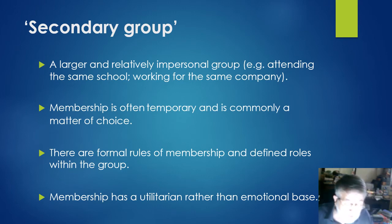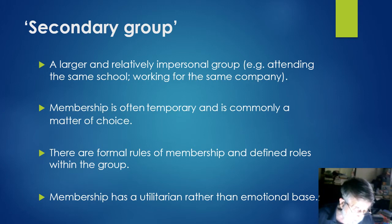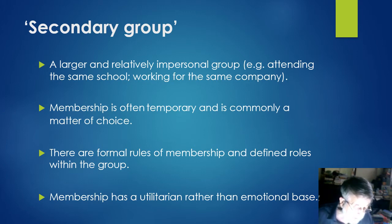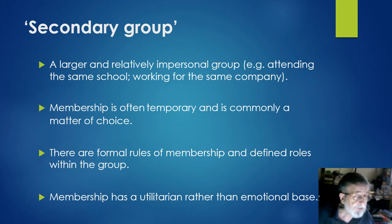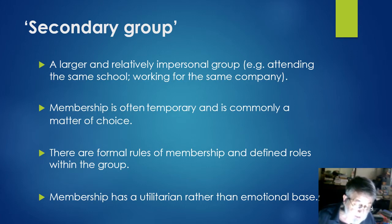By contrast, secondary groups are often large and relatively impersonal. They include large schools, universities, corporations, government bureaus, and the military. Membership is often only temporary, and with certain exceptions, like prisons and the military, a matter of choice. Secondary groups are formal organisations, commonly having formal rules of membership. Members may be formally defined with specialised roles within the group. Involvement with the group is likely to be based on practical, utilitarian objectives rather than strong emotional commitments, and members' social interactions with each other can be relatively limited and even fleeting.